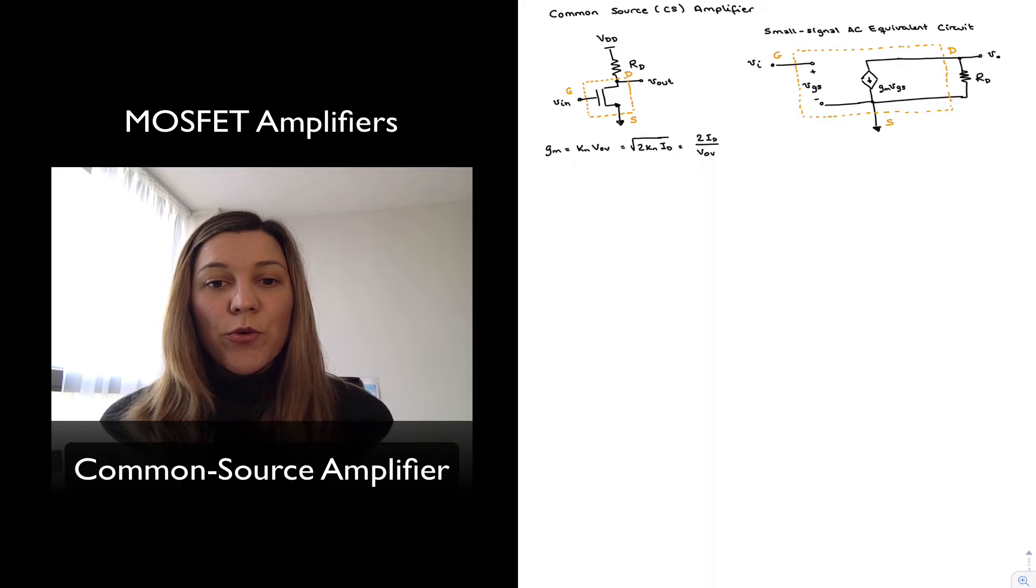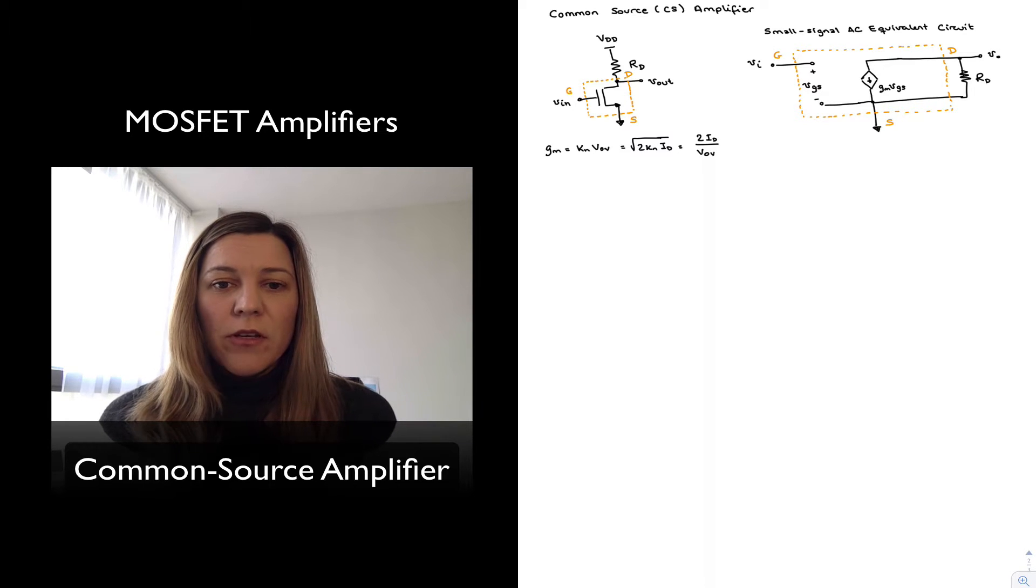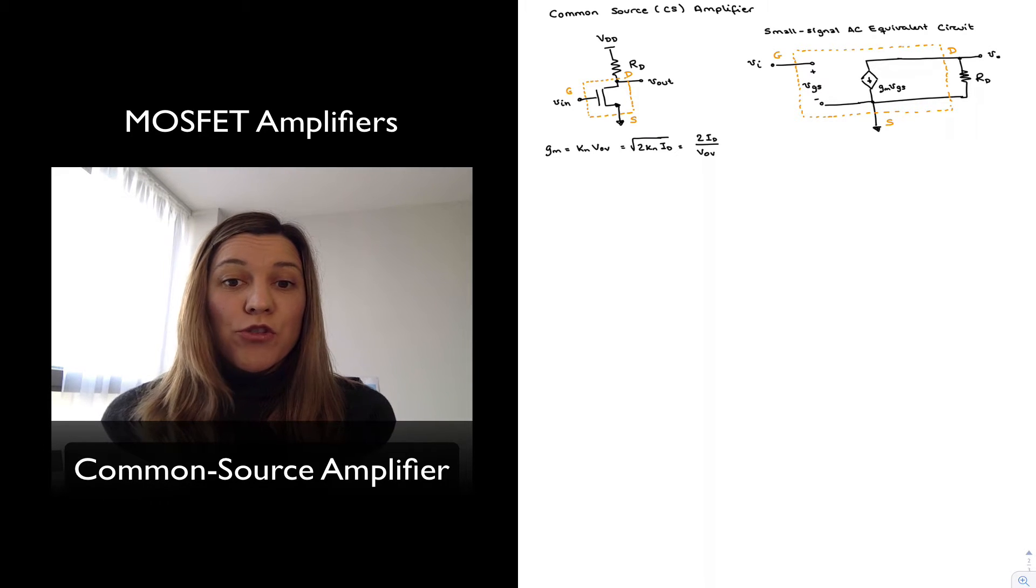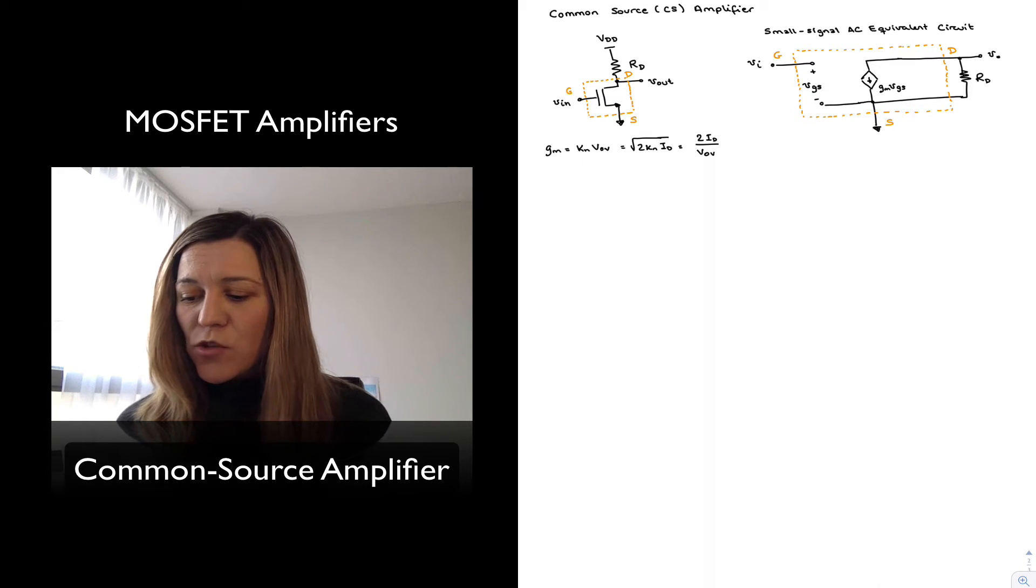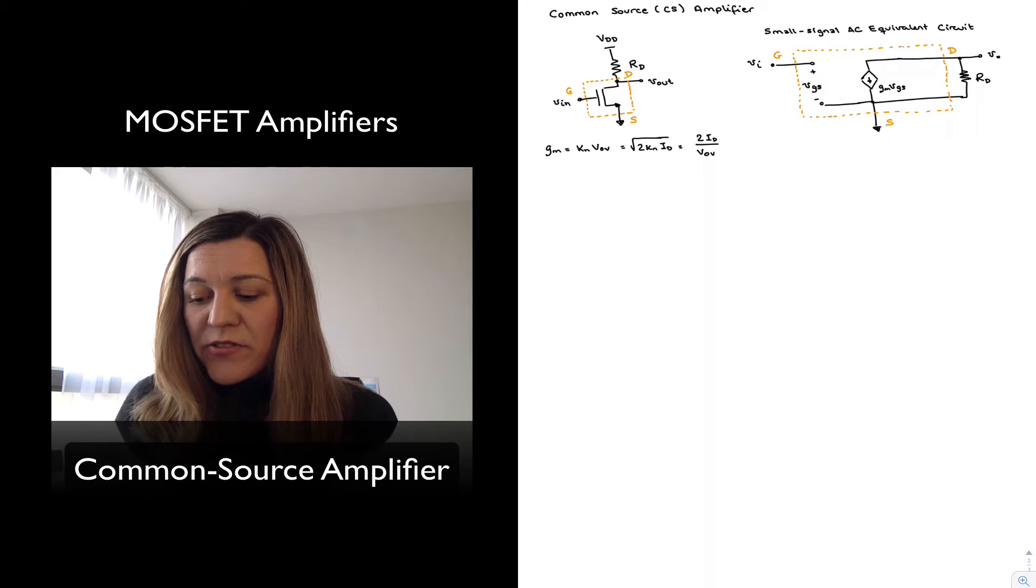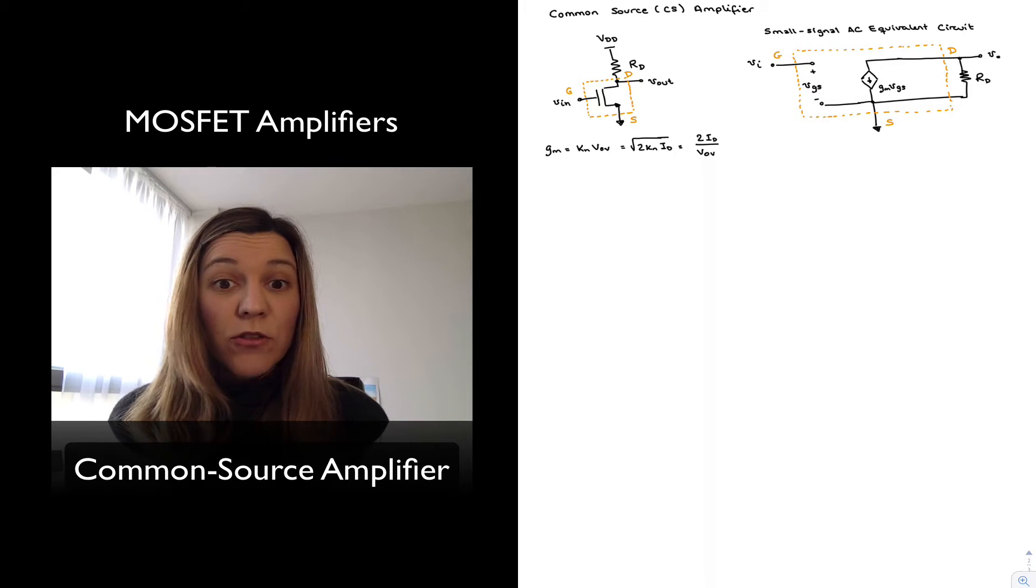Hello. In this video we are going to analyze the common source amplifier and we're going to come up with expressions for its small signal voltage gain, input resistance and output resistance. So I have drawn a basic schematic for a common source amplifier where the input is applied at the gate and the output is taken out of the drain.